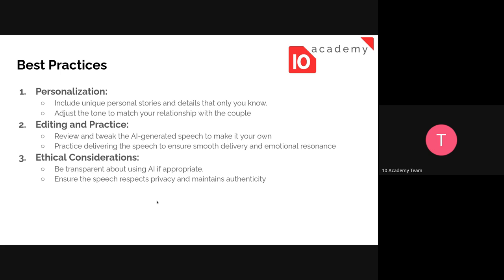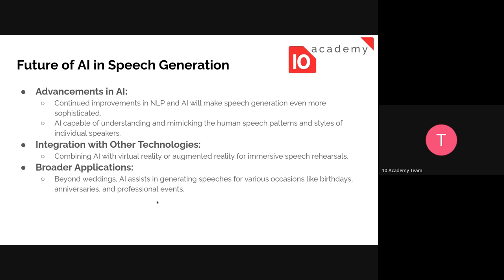For best practices: first, personalize the generated speech by including partner stories and details only you know. Second, adjust the tone to match your relationship with the couple or other parties. Third, edit and practice — review and tweak the generated speech to make it your own, and rehearse to ensure smooth delivery and emotional resonance during the wedding. Finally, consider ethical points: be transparent about using AI if appropriate, and ensure the speech maintains authenticity.